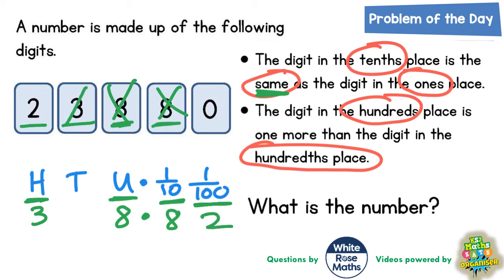Now there's only one digit left, which is the zero, and there's only one place left, which is in the tens column. So that tens column must be the zero. So the number we're looking for is 308.82.